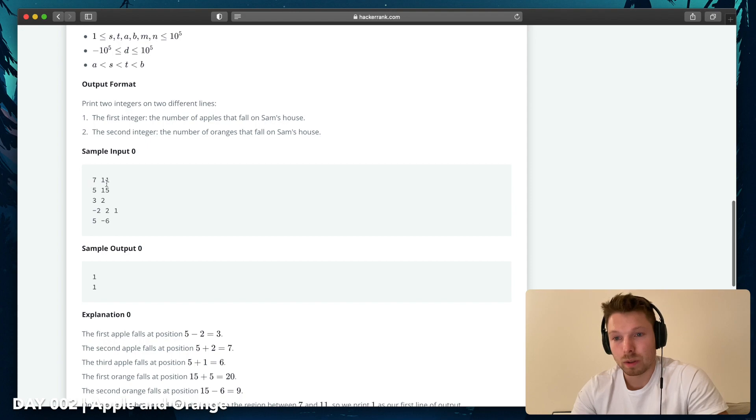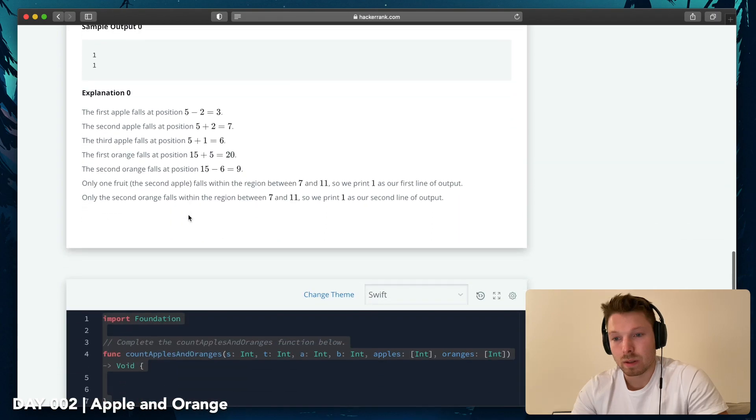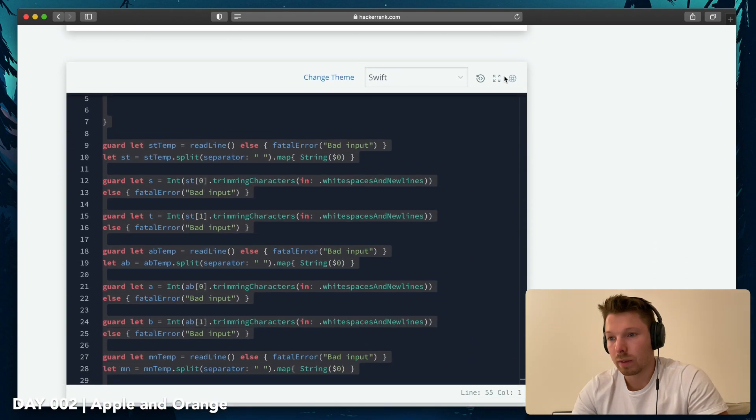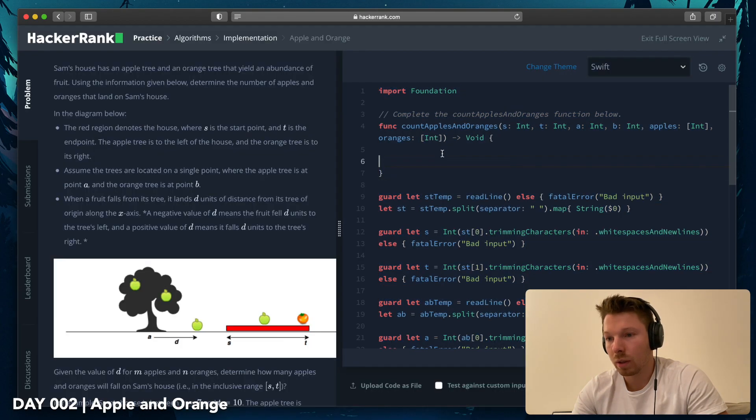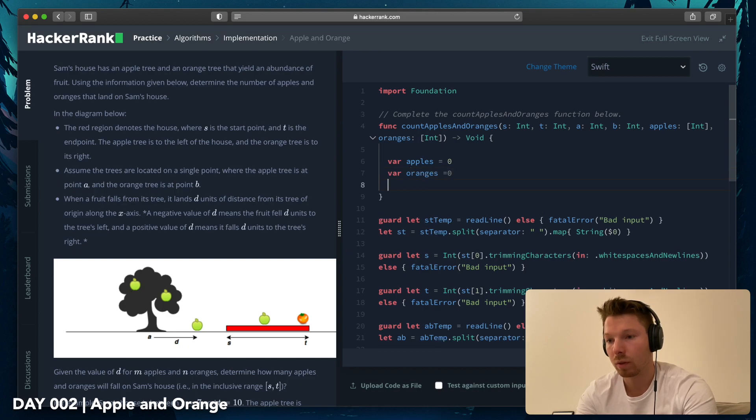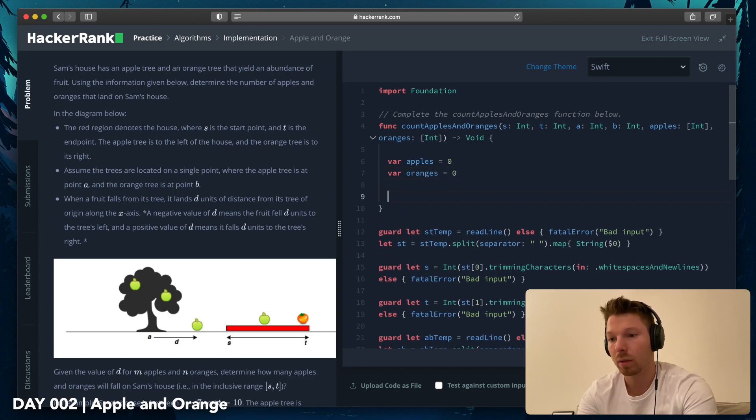Sample input: seven, eleven, five, fifteen. That's interesting. Let's do full screen and say we have apple tree. So apples zero, oranges zero. We start at zero. That's the count that we want to have in the end to print.